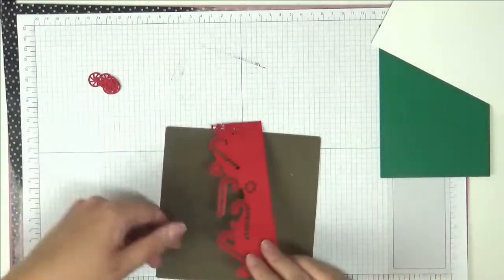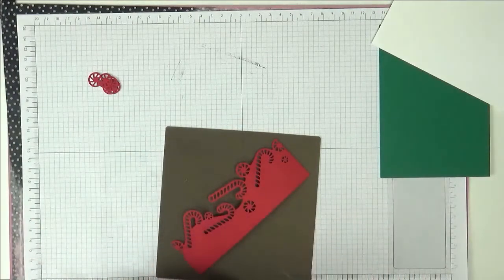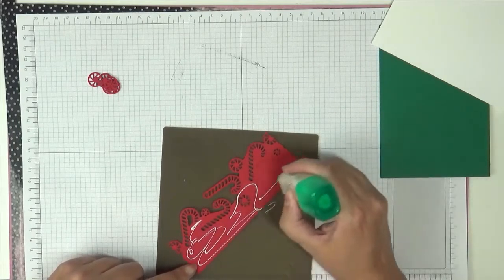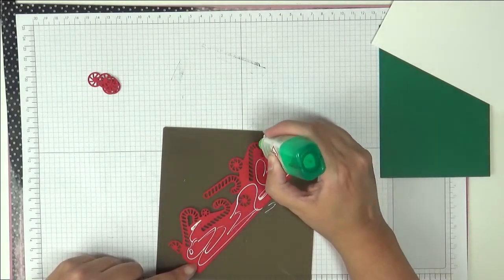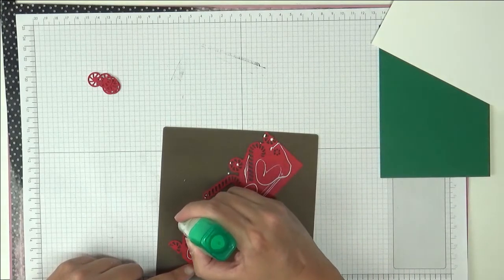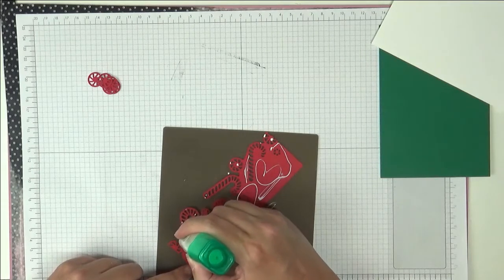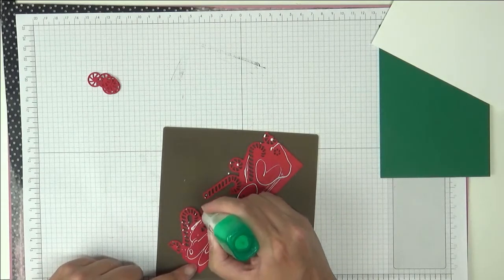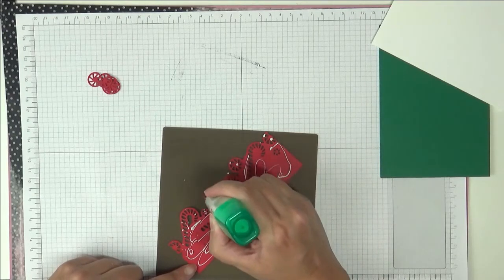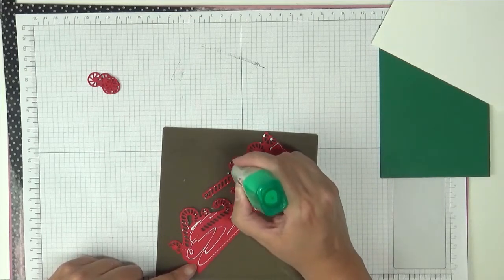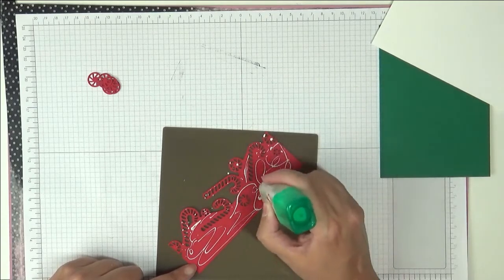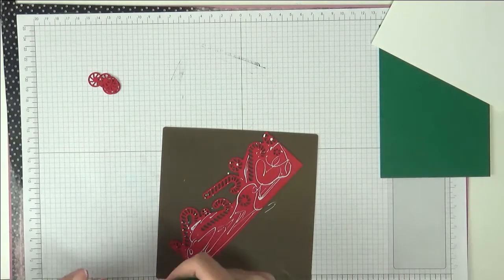I'm going to use my silicone mat to do it so I don't get Tombow all over the place, but you need a glue that can get into all these nooks and crannies. I'm just being quite delicate, quite light with the Tombow, especially where it's all these small bits. That'll be more than enough.